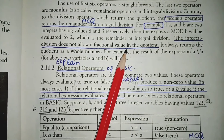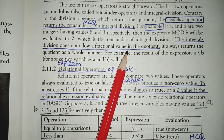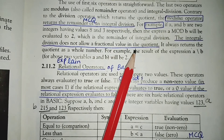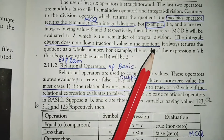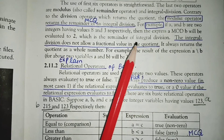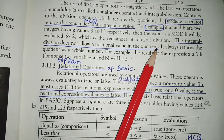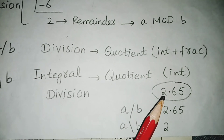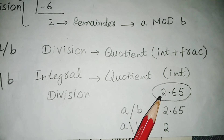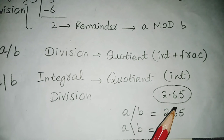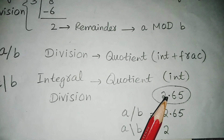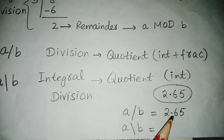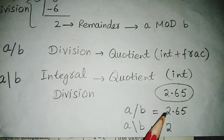Integral division does not allow a fractional value in the quotient. We don't write anything after the decimal point — we don't write the fractional part. So let's see: suppose we have two numbers divided, and the answer after division is 2.65. This 2.65 is basically the quotient. If we do the regular division operation A / B, then 2.65 will be the answer.